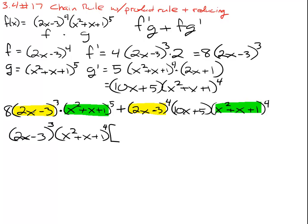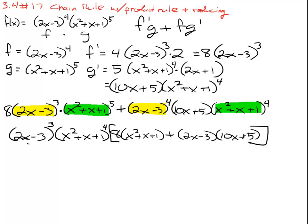Then we write down what's left. On the left side we still have the 8; we took all three (2x minus 3)'s and 4 of the (x squared plus x plus 1)'s, so we have one of those left. On the right side we have one more (2x minus 3) and the linear term, and all 4 of the (x squared plus x plus 1)'s are gone. We've got a product, but we still can't set the bracket equal to zero as it sits, so we have to combine like terms and FOIL everything out.